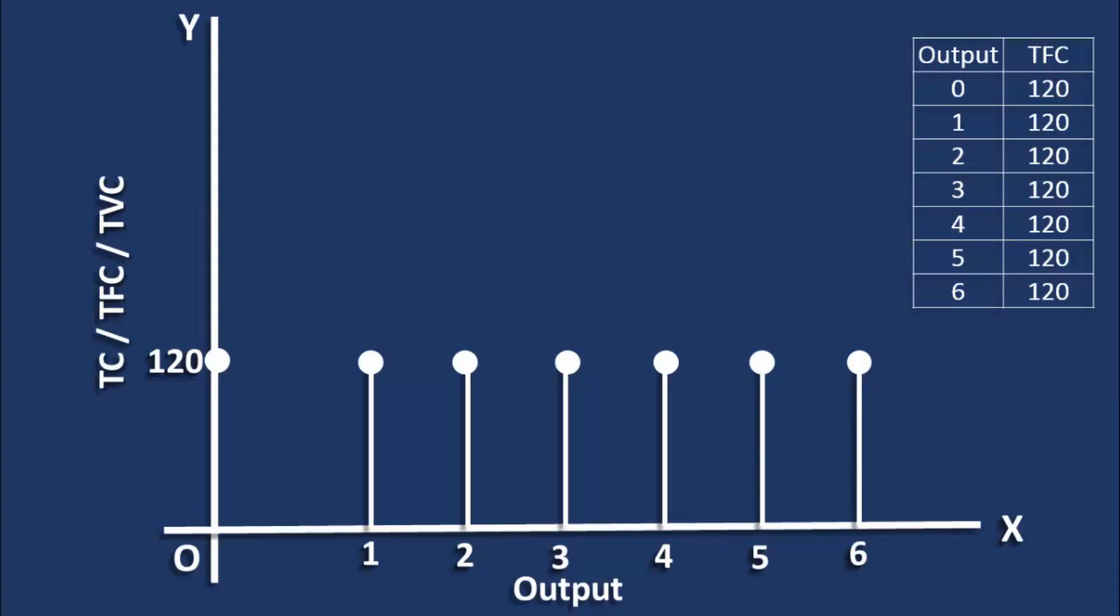By joining these points, we get the total fixed cost curve. It is a linear curve. It is parallel to the X axis.